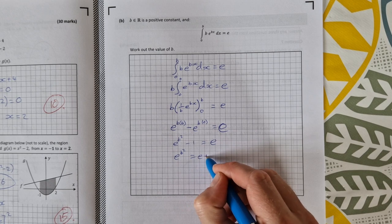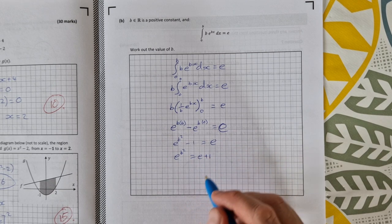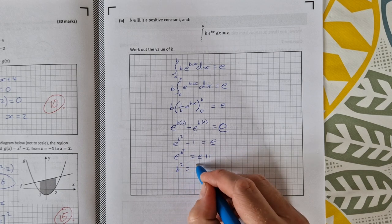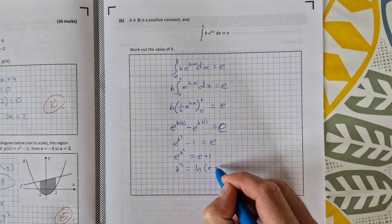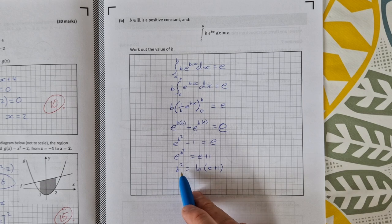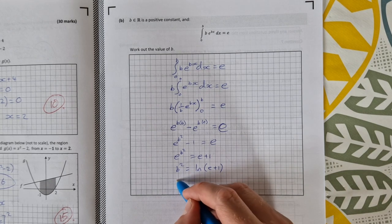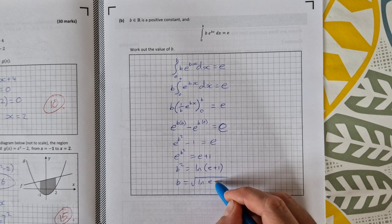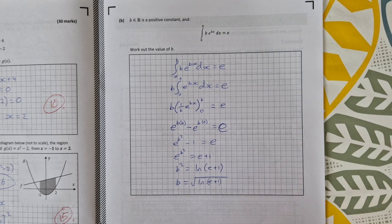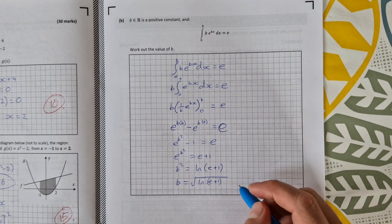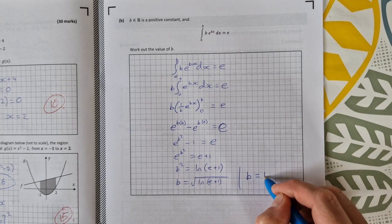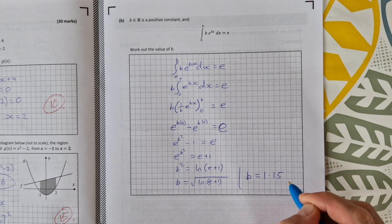Take the natural log of both sides, that will give me b² = ln(e + 1). Then I can take the square root of both sides and say b = √[ln(e + 1)]. And that on the right hand side you can put into your calculator, and you end up getting b = 1.15.